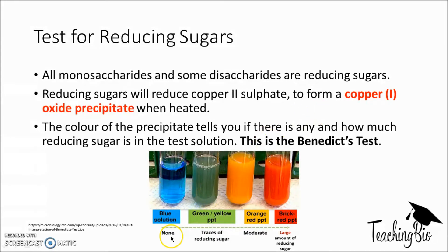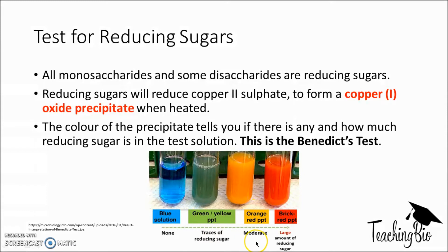If the solution remains blue it means that there's no reducing sugar present. If it turns green or yellow it means that there's some reducing sugar present. If it's orange there's quite a bit. However, if it's brick red - which is the copper(I) oxide precipitate - then there's a large amount of reducing sugar present.